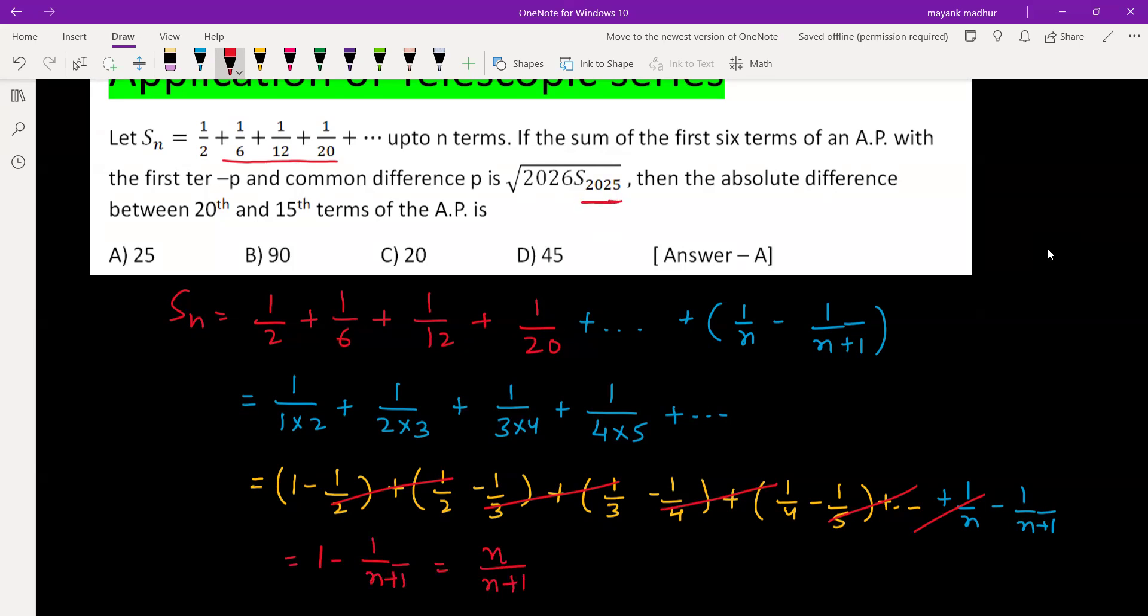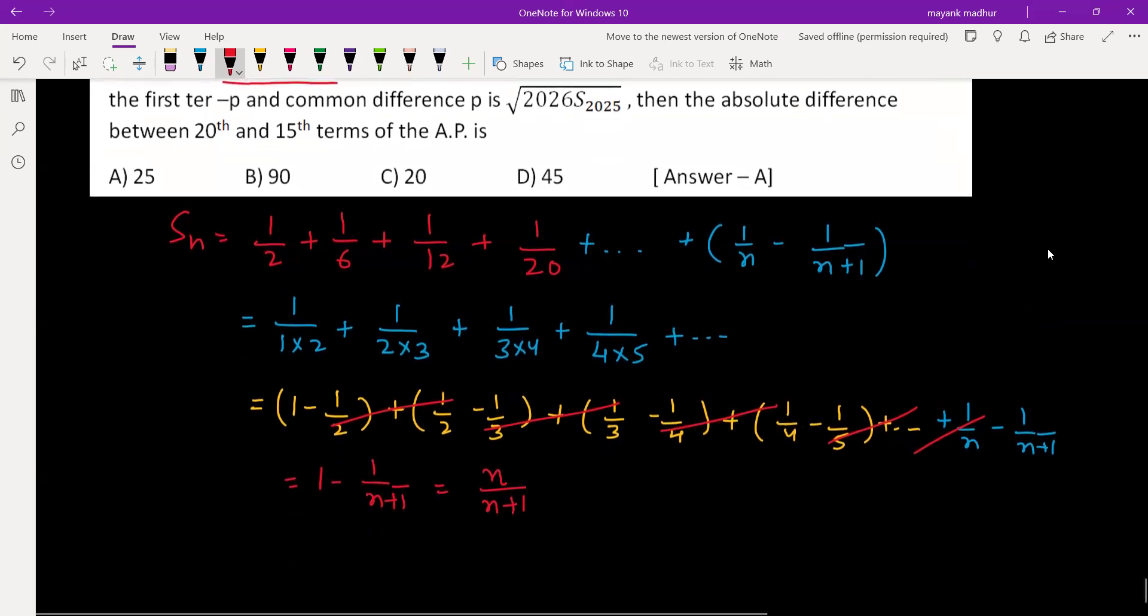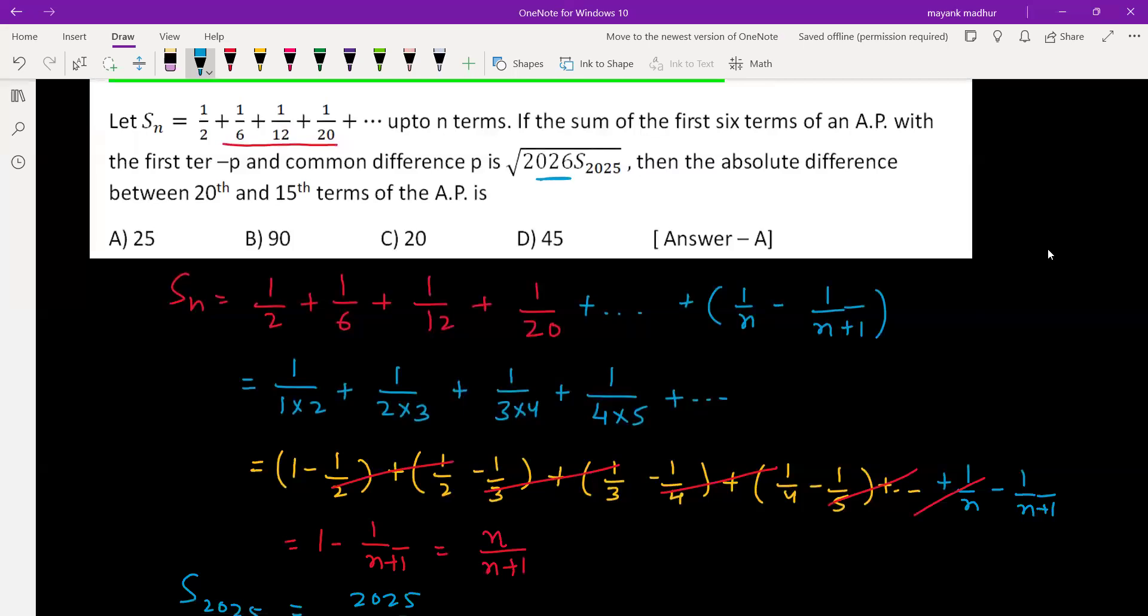Now we need S_2025. This was the value of S_n. So S_2025 will be putting n equal to 2025. It is 2025 divided by 2026. Then they have given this multiplied by 2026 is what?